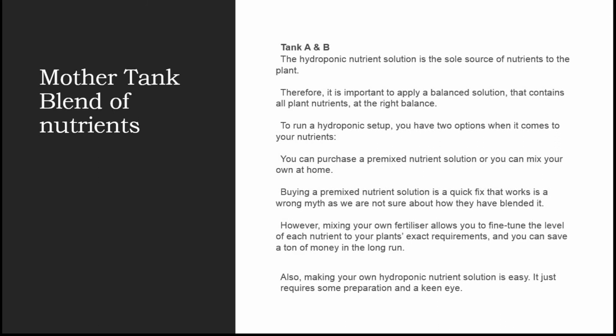To run a hydroponic setup you have two options for nutrients. You can purchase a pre-mixed nutrient solution — but this is only for those who want to do hydroponics in a small size at home as a hobby. If you are going commercially, make sure that you mix your own nutrient solution. Buying a pre-mixed nutrient solution as a quick fix is a wrong myth, as we are not sure how they have blended it. Mixing your own fertilizer allows you to fine-tune the level of each nutrient to your plants' exact requirements and you can save tons of money in the long run.